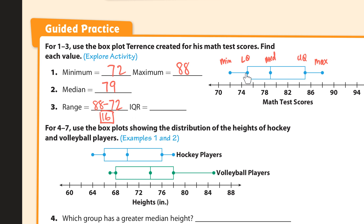Our upper quartile is 85 — right around 84, 85 — and our lower quartile would be 75, because 74, 75, 76, 77, 78 and so on. So that was 85 minus 75, which is 10.